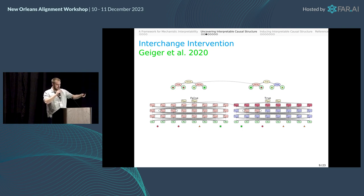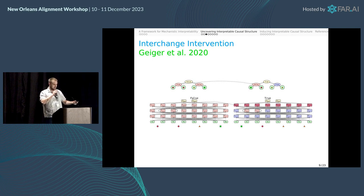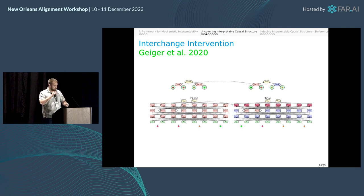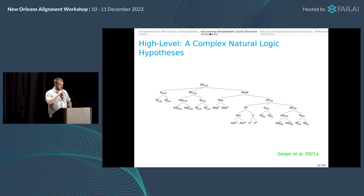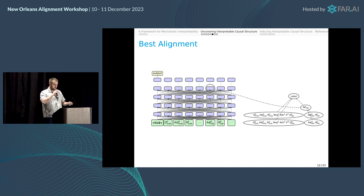On the top half you can see a high-level model with an interchange intervention, and a low-level model with an interchange intervention, and we check whether the neural network matches the behavior of the simple high-level model. We did this on some complicated natural language inference tasks with a complex tree structure, and this was the alignment we found.